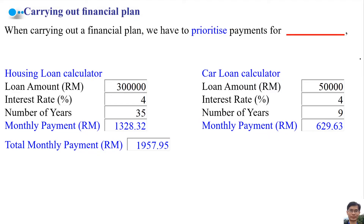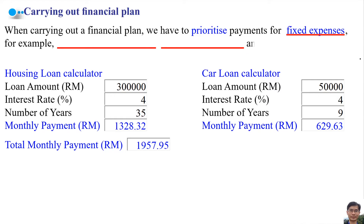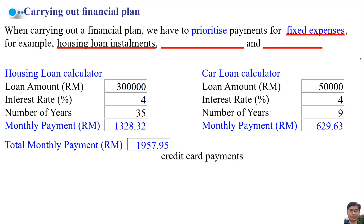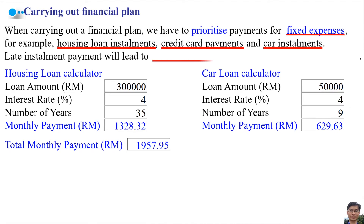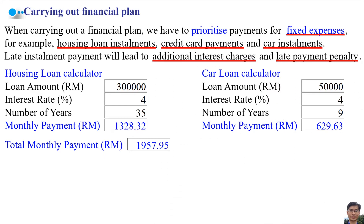When carrying out a financial plan, we have to prioritize payments for fixed expenses, for example housing loan installments, credit card payments, and car installments. Late installment payments will lead to additional interest charges and late payment penalties. The average price of a house in Malaysia is about 200,000 ringgit.